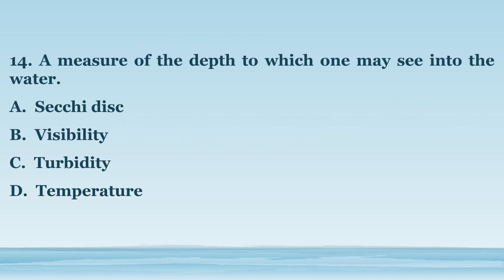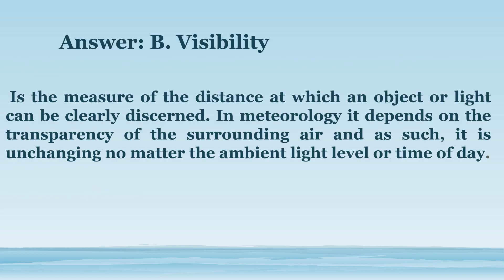Number 14. A measure of the depth to which one may see into the water. A. Secchi disc. B. Visibility. C. Turbidity. D. Temperature. The answer is letter B. Visibility. Is the measure of the distance at which an object or light can be clearly discerned. In meteorology, it depends on the transparency of the surrounding air and is unchanging no matter the ambient light level or time of day.